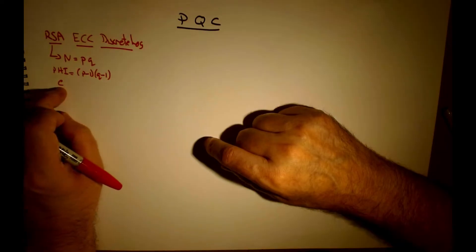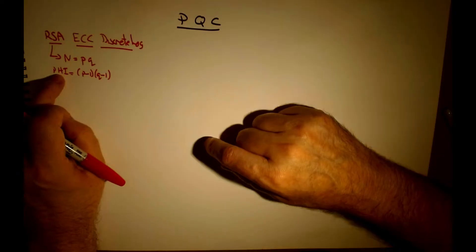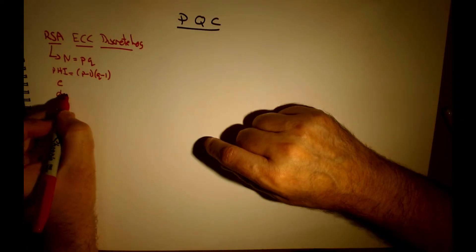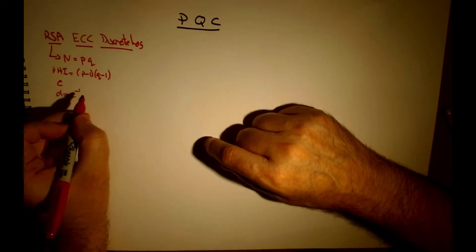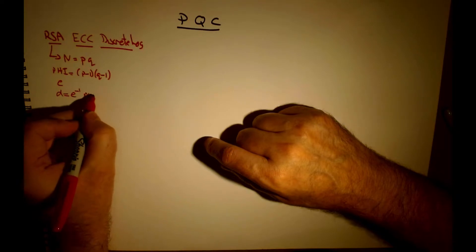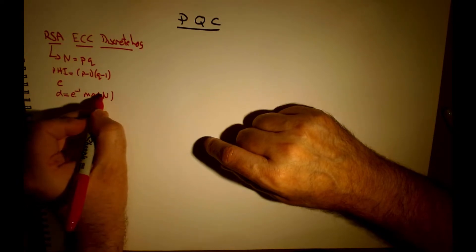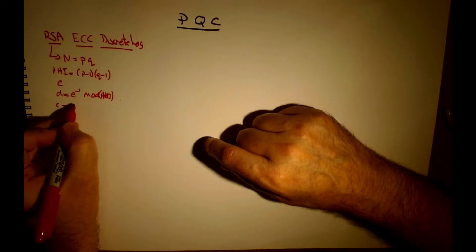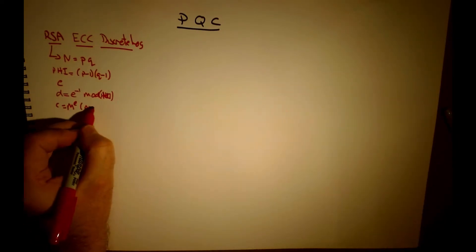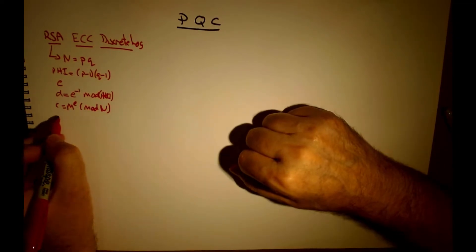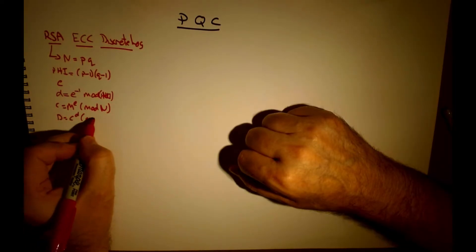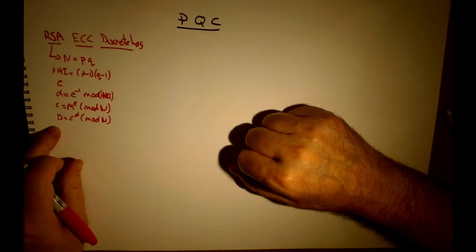We then work out our encryption key value so that it does not share a value with phi. And then we work out D, which is the inverse of E mod phi. When we want to cipher, we take the message, raise it to the power of E, mod N. And then to decipher, we take the cipher to the power of D and do mod N, and then we can decrypt.